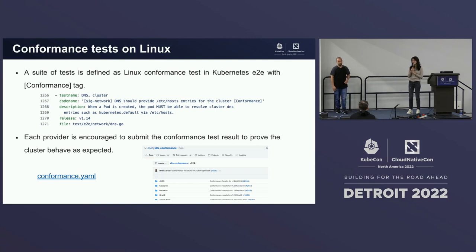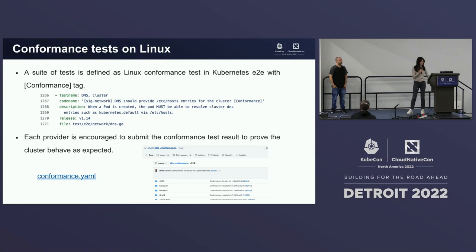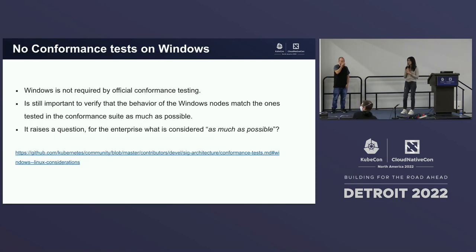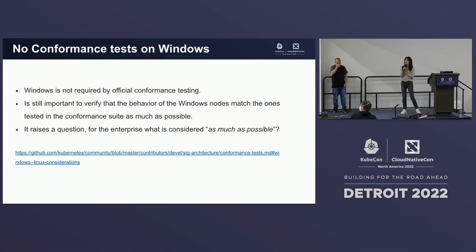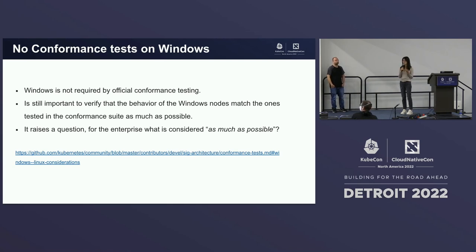Each provider is encouraged to submit test results to prove their cluster's behavior is as expected. However, there is no Windows conformance test right now. In KEP 2578, we want to introduce a way to test your Windows cluster — it's still important to verify cluster behavior, though it's not yet official CNCF testing. A Windows Kubernetes cluster means it supports running containers on Windows OS. You can use Linux as the control plane node OS and use Windows OS for your worker nodes.